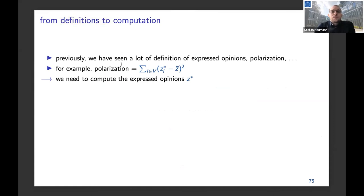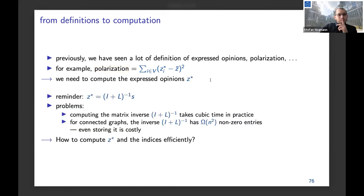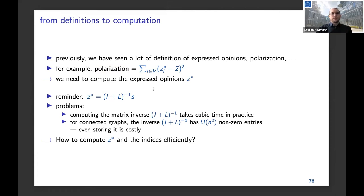Now we move to more algorithmic aspects and understanding interventions for moderating opinions. So far we've seen definitions of equilibrium expressed opinions, polarization, and so on. In order to compute all of these quantities we have to compute Z*. As a reminder, Z* is computed via a matrix inverse, which takes cubic time in practice. And for connected graphs, this inverse matrix is dense with O(n²) non-zero entries, so even storing it is often prohibitive.